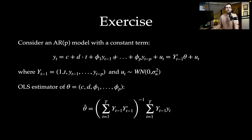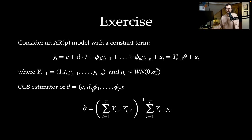Let's consider the AR(p) model with a constant term and possibly also with a linear time trend. We have p lagged variables, p coefficients, and a white noise process u that is mean zero with variance sigma squared u. Let's put all those regressors, as you already know from your econometrics class, into a matrix — I'm calling this matrix uppercase Y. We can then define the OLS estimator of the constant, the coefficient for the linear trend, and the p autoregressive coefficients.